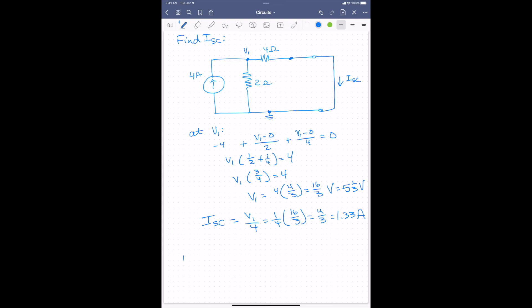So now the last thing we have to do is find R Thevenin, and R Thevenin will be VOC over I short circuit. VOC, if I remember correctly, was 4 volts. I short circuit is 4 thirds amps, so that will give me 4 times 3 fourths, which will give me 3 ohms.